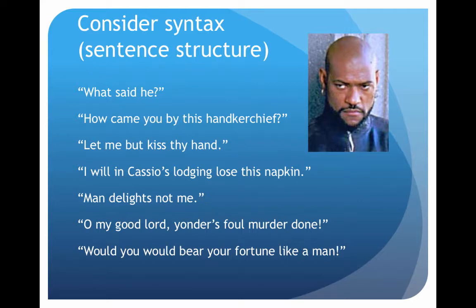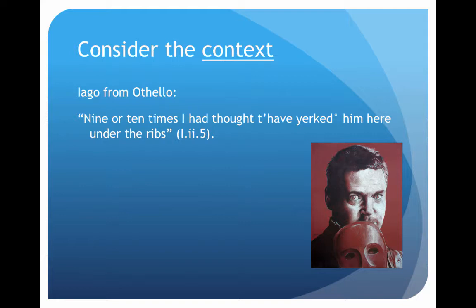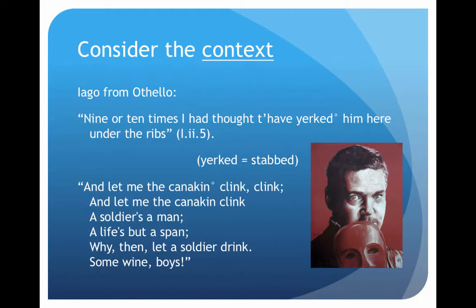Moving on — think about the context. Here's Iago in Othello: 'Nine or ten times I had thought to have yurked him here under the ribs.' You'll have known Iago a little bit by the time you read this, and not that many things you can do to someone under the ribs that might be described as 'yurk.' It's not a word we use anymore, but if you guessed that it meant 'stabbed,' then you're right — and you got that just from the context. 'Let me the canikin clink, clink, and let me the canikin clink. A soldier's a man, a life's but a span. Why then let a soldier drink?' What are you clinking when you're drinking? A cup or a container. We got that totally from the context.